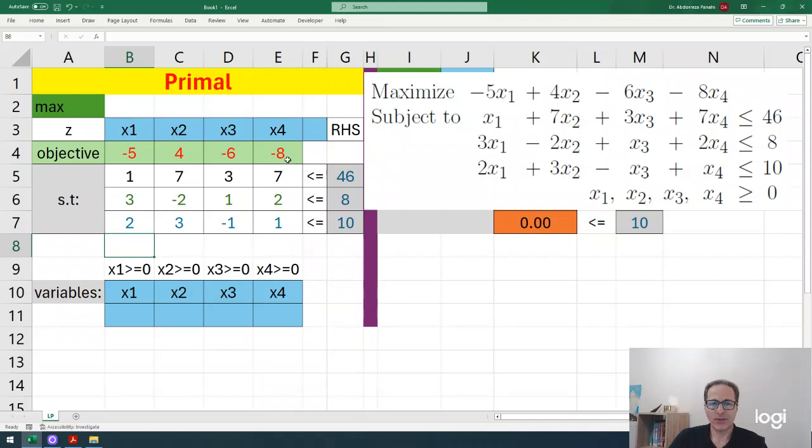Now we're done with importing the data to the tableau form. It looks like a simplex tableau but not exactly - in the simplex tableau we need to change inequalities to equalities by adding or subtracting slack or surplus variables. These cells keep the values of decision variables, and Excel considers them zero for now.